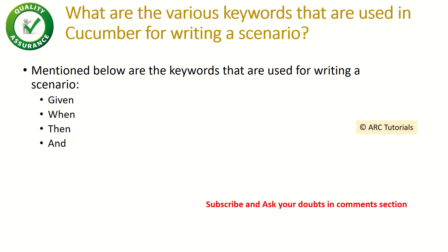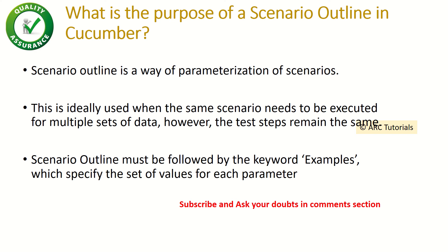What is the purpose of scenario outline in cucumber? Scenario outline is a way of parameterizing scenarios. It is ideally used when the same scenario needs to be executed for multiple data sets but the test steps remain the same. Whenever you need to run the same steps with different data sets, you write a scenario outline and pass multiple data sets. Scenario outline must be followed by the keyword 'examples', where you list the set of data to run.